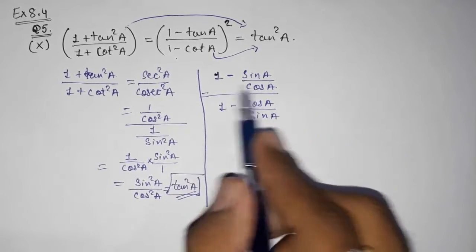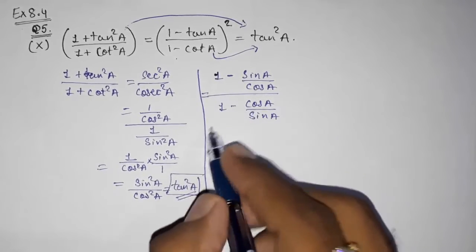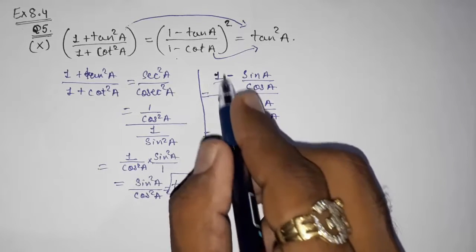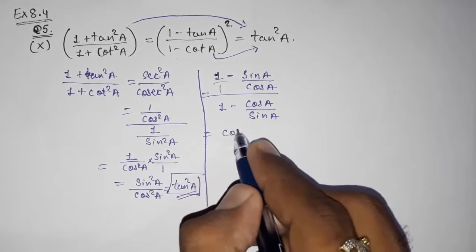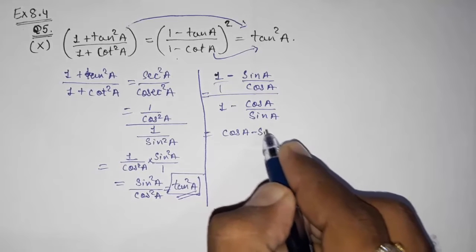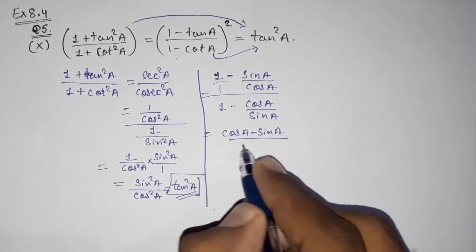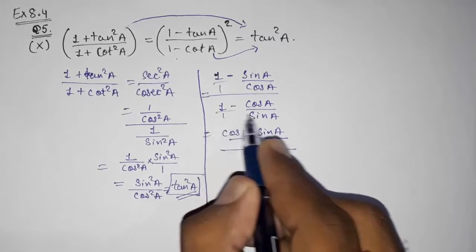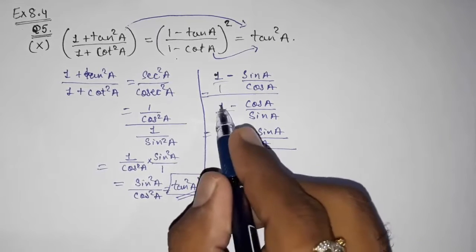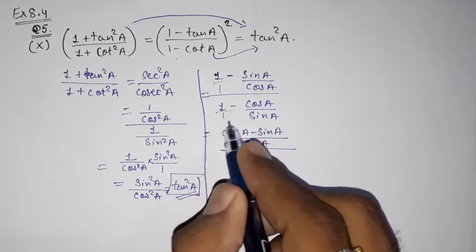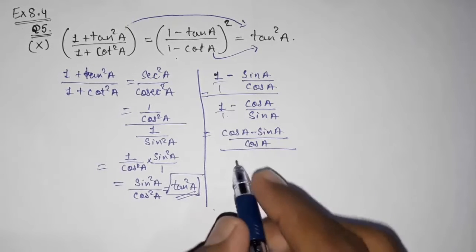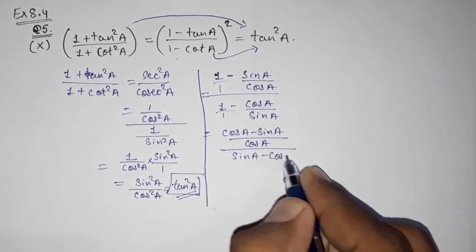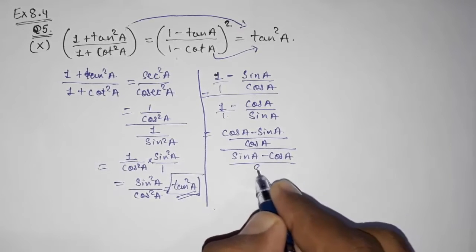Now we find the LCM in the numerator. Multiplying through by cos a, the numerator becomes (cos a - sin a) / cos a. In the denominator, multiplying through by sin a gives (sin a - cos a) / sin a.